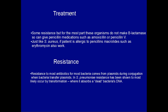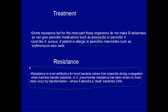For treatment: staph produce beta-lactamase but strep do not, so they're usually susceptible to penicillin medications like amoxicillin or penicillin. If a patient is allergic to penicillins, macrolides such as erythromycin do work. Most antibiotic resistance in bacteria comes from plasmids via conjugation, where one bacteria transfers a plasmid to another. However, in S. pneumoniae — and this is a high-yield fact — resistance comes from transformation. This is when a bacterium lyses, the membrane dissociates, DNA leaks out, and other bacteria can pick up that DNA. If they pick up a piece encoding antibiotic resistance, they will become resistant. Streptococcus pneumoniae is one of the bacteria that does this.